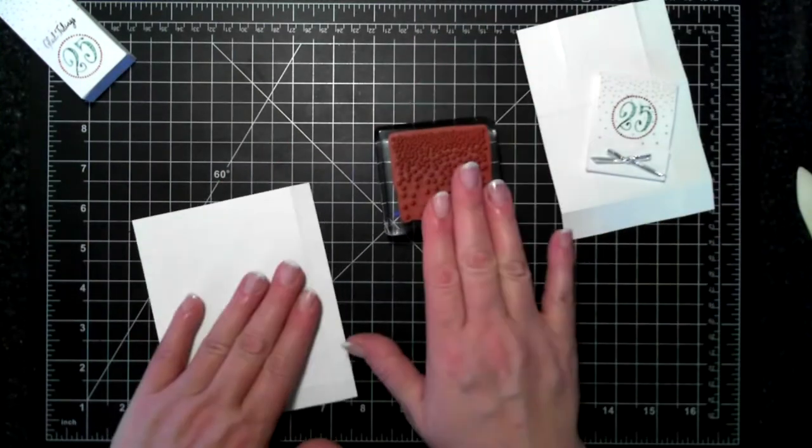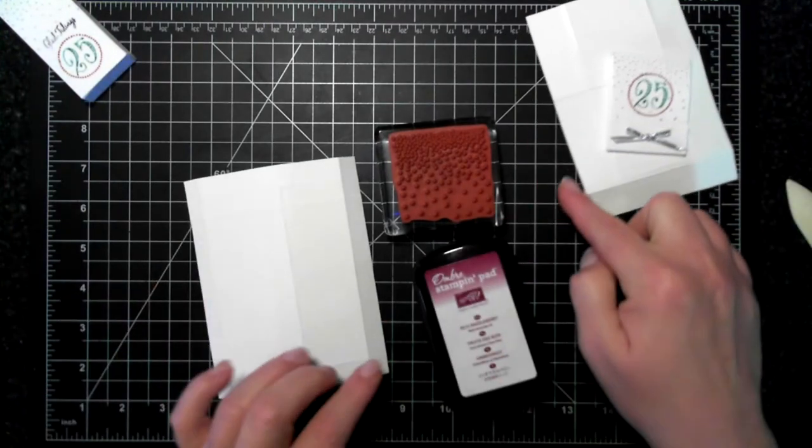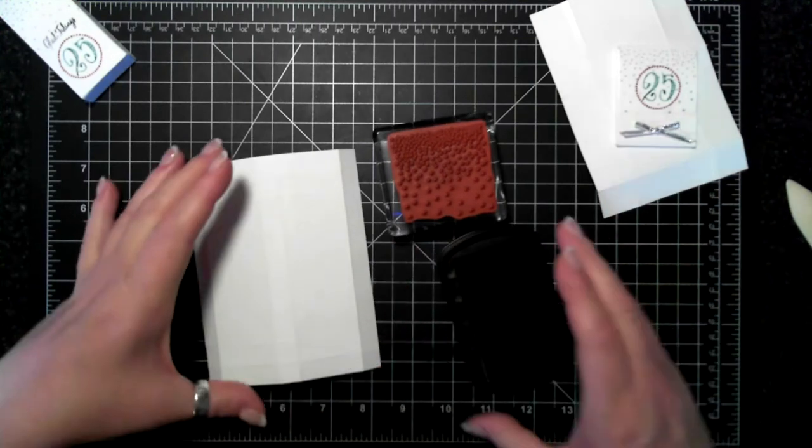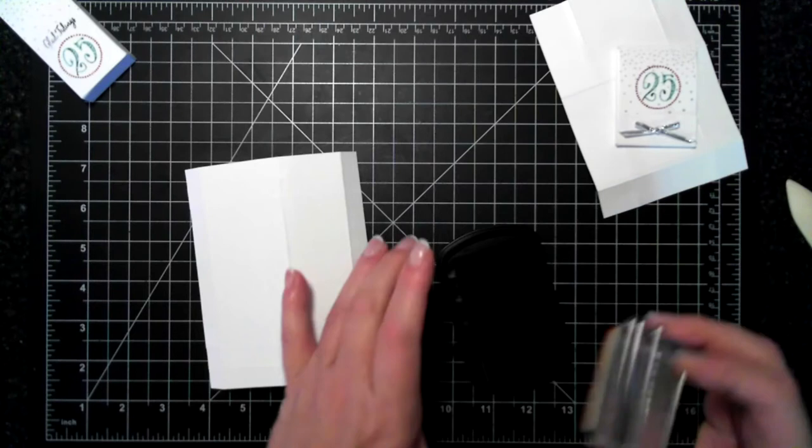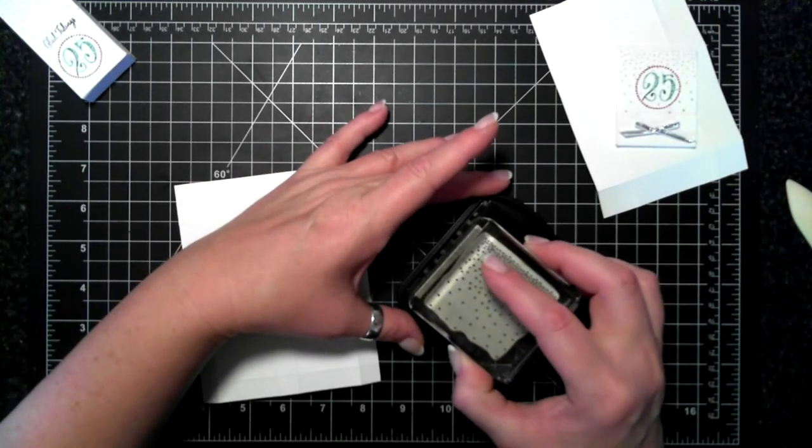So I have the snowflakes or what have you right there but I'm going to use my Rich Razzleberry, the ombre stamp, and let's see here I want the latest color.